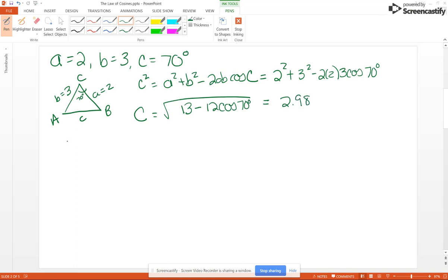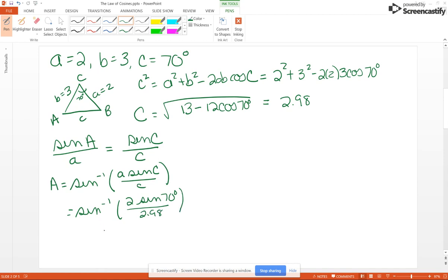Now at this point, we have the information that we need to find the other two angles. Some books tell you to find the angle opposite of the shorter side, so we're going to try to find angle A. We're going to switch over to the Law of Sines. We usually don't use the Law of Cosines more than once in a problem, mainly because we don't want to deal with radicals. So sin A / a = sin C / c. So A is going to be the inverse sine of a sin C / c. That's the inverse sine of 2 sin 70° / 2.98, and that's going to come out to be approximately 39.1°.